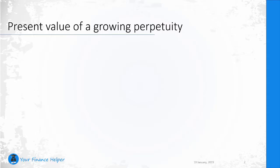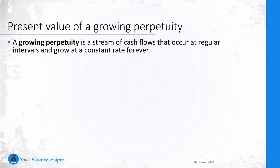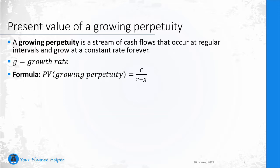The present value of a growing perpetuity is a stream of cash flows that grow at a constant rate forever. We denote the growth rate using the letter G. The formula for the present value of a growing perpetuity is quite similar to the present value of a standard perpetuity — the only difference is that we subtract the growth rate from the interest rate.